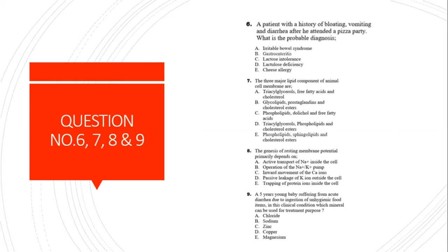Question 6: A patient presents with bloody vomiting and diarrhea after attending a pizza party. The probable diagnosis from the options - irritable bowel syndrome, gastroenteritis, lactose intolerance, or cheese allergy - is cheese allergy, option E. Pizza is the clue, as it contains cheese, and the person is probably having a cheese allergy causing these symptoms.